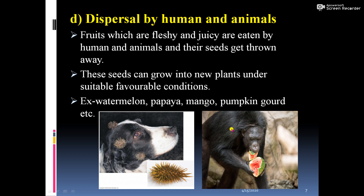This chimpanzee is also eating watermelon. Fruits which are fleshy and juicy are eaten by humans and animals, and their seeds get thrown away. These seeds can grow into new plants under suitable, favorable conditions — air, water, and warmth. Examples include watermelon, papaya, mango, pumpkin, and gourd.